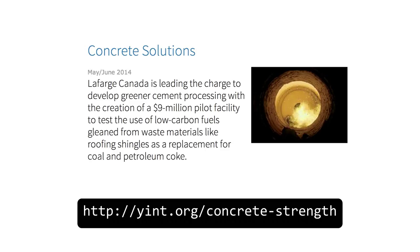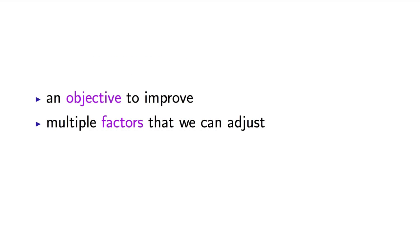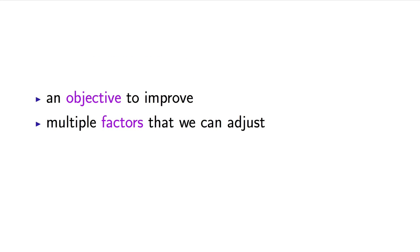Here's an interesting example of a company that's now adding recycled construction waste and old building materials into their new concrete. One common theme in these examples is that they have two features: there is an objective to improve something, and there are two or more factors we can change to make that improvement. So there's an outcome we want to improve, and there are factors. We'll learn more about those terms in the next video.